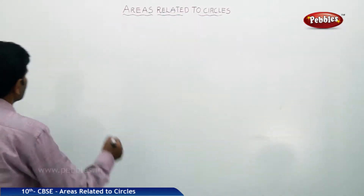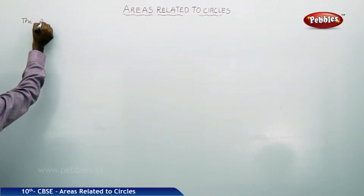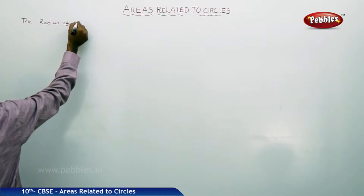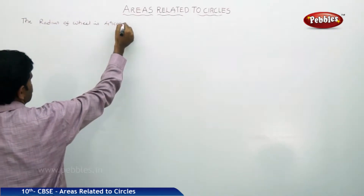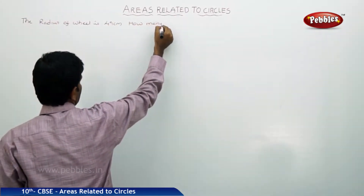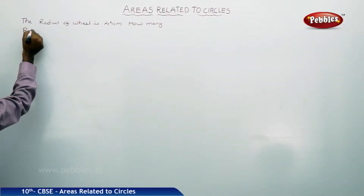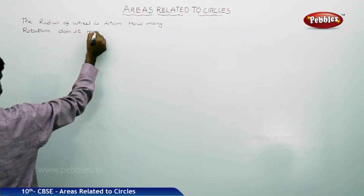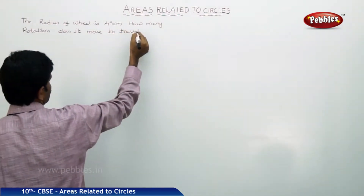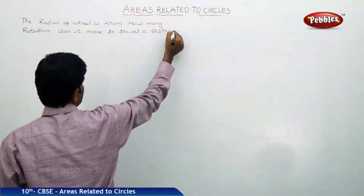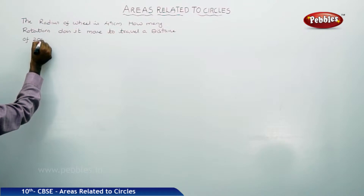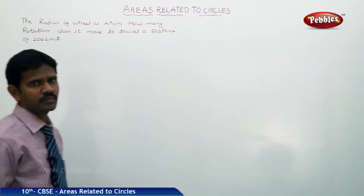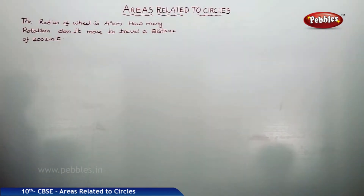Let us see the next example. The radius of a wheel is 49 cm. How many rotations does it make to travel a distance of 2002 meters?